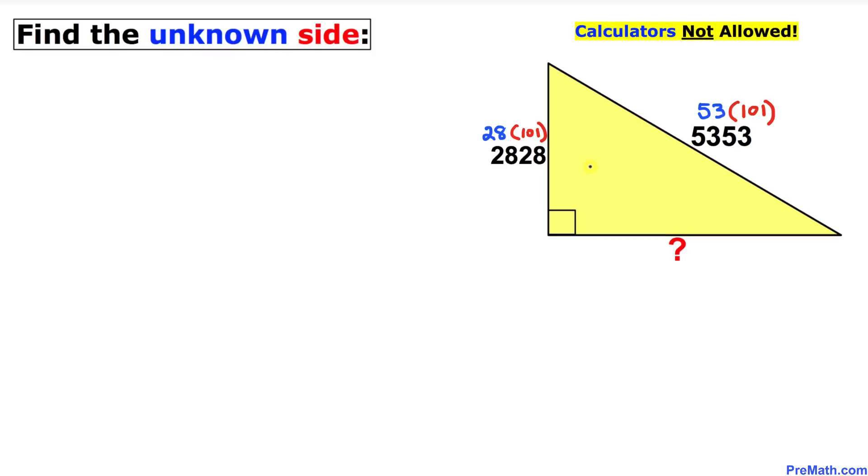Now we can see that we are dealing with a right triangle and we want to find this unknown side. Therefore, we are going to use the Pythagorean theorem.